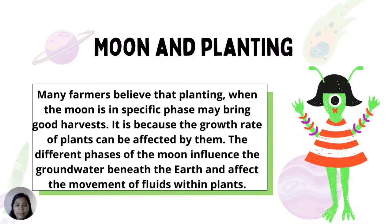Moon and Planting: Many farmers believe that planting when the moon is in a specific phase may bring a good harvest. It is because the growth rate of plants can be affected by the moon. The different phases of the moon influence the groundwater beneath the earth and affect the movement of fluids within plants.